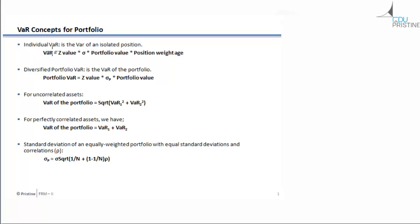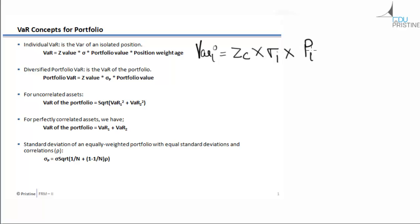Let us start with Individual VaR. Individual VaR is a VaR for an isolated position — it is the VaR corresponding to a particular position in a portfolio. This Individual VaR can be calculated by the formula: VaR equals Z-value multiplied by the standard deviation of that particular position, multiplied by the portfolio value, multiplied by the weightage of that position. Simplified, it is ZC into the standard deviation of the isolated position into the value of that position.